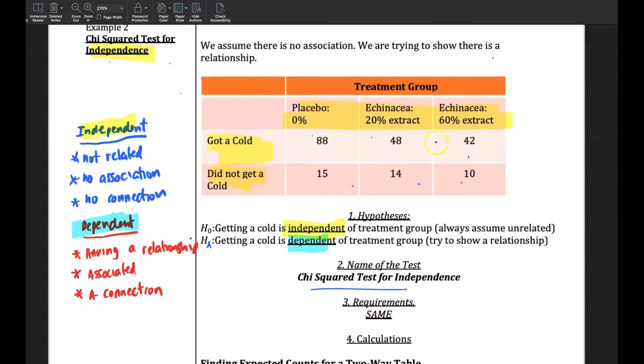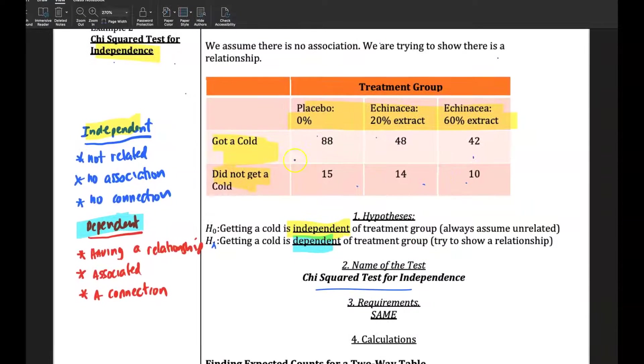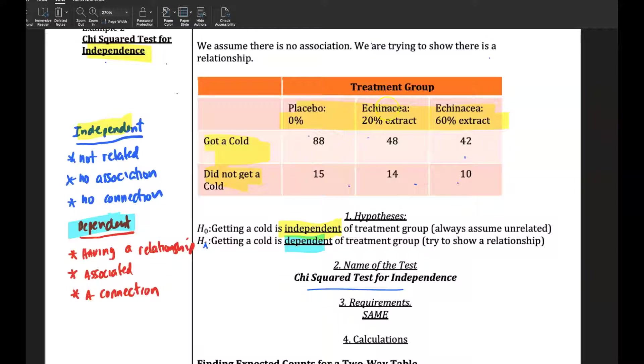Okay, so let's take a look at how to do this on StatCrunch, how to run this test here. So you have this contingency table, or these tables of values of these categorical variables.